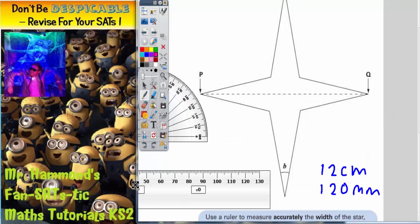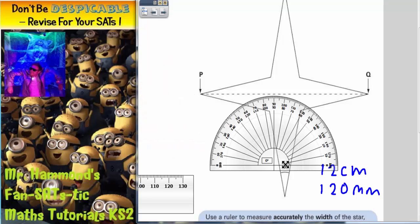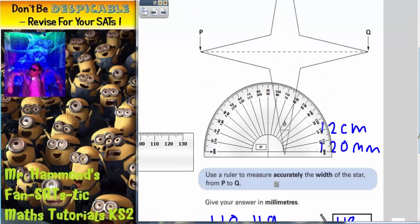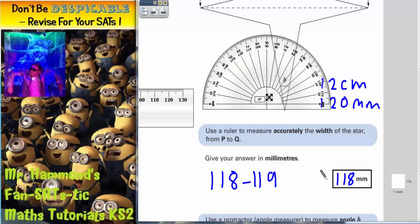So let's move the ruler out of the way and let's bring the angle measurer in. Now the first thing you must do is you must rotate the angle measurer so that the center of the angle measurer here is on the corner of the angle that you're trying to measure, as best you can, like that.